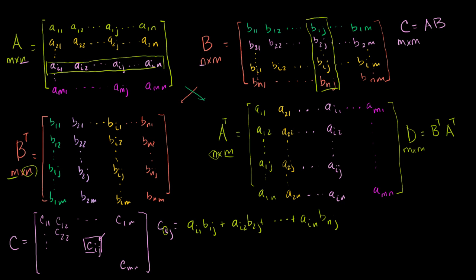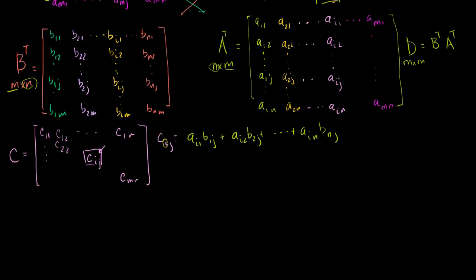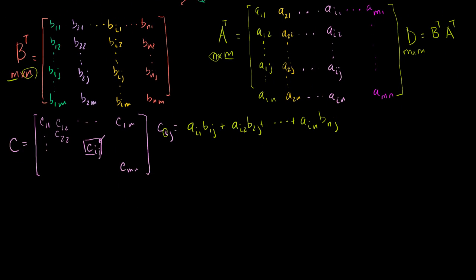Now, what about our matrix D? What are its entries going to look like? So D, similarly, it's going to look like, you know, you're going to have D11, D12,